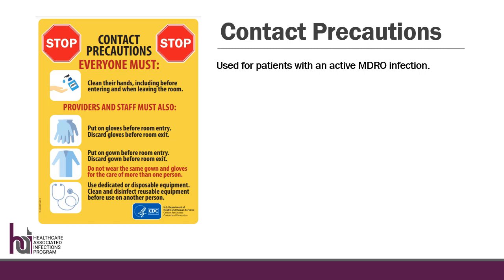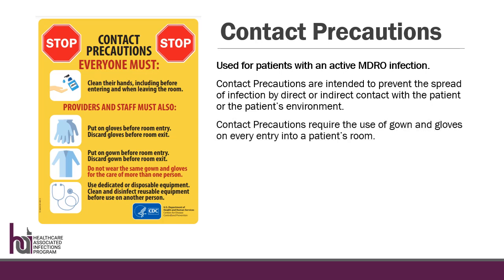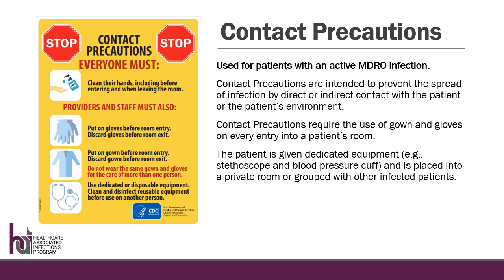Contact precautions are a group of infection prevention practices implemented for residents with an active MDRO infection. They are used when standard precautions alone are not enough and are intended to prevent infections from spreading by direct or indirect contact with the resident or the resident's environment. Contact precautions require the use of gowns and gloves on every entry into a resident's room. The resident is given dedicated equipment like their own stethoscope and blood pressure cuff and is placed into a private room.